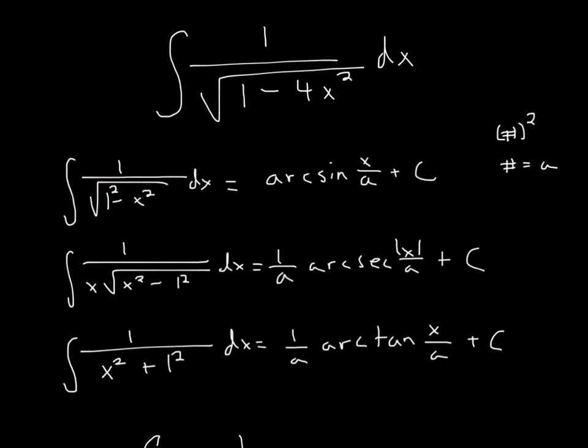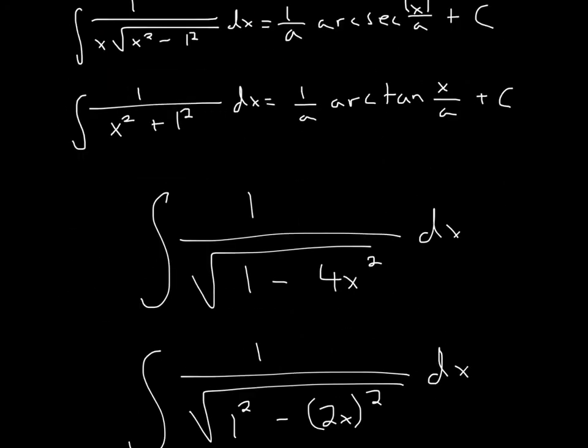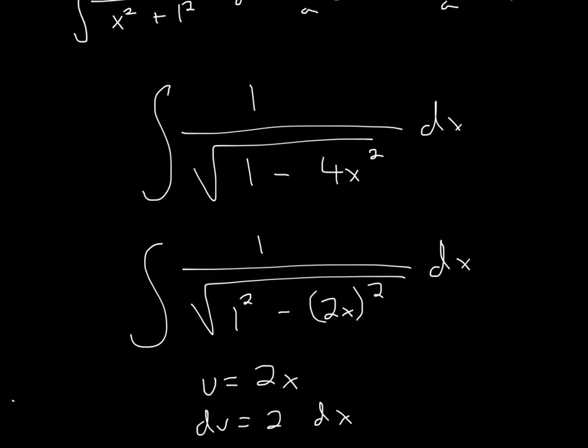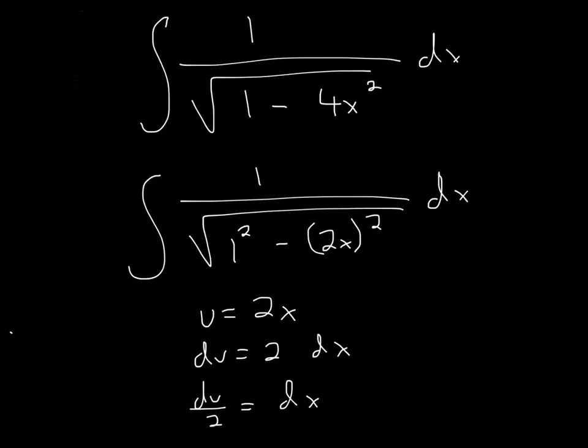So we need to make this look like this. We have 1 over square root of 1 minus 4x squared. So I'm going to rewrite this as 2x squared, because 2 squared is 4, x squared is x squared, and 1 squared is still 1.